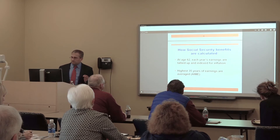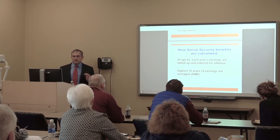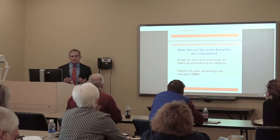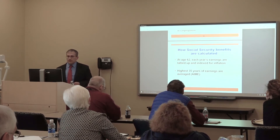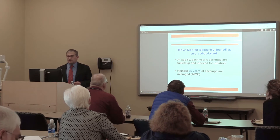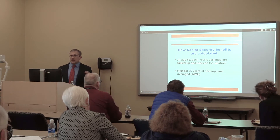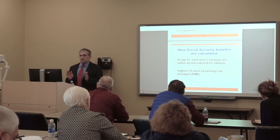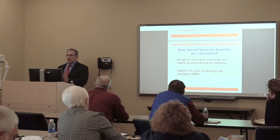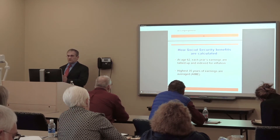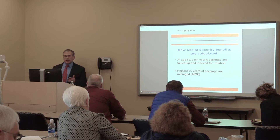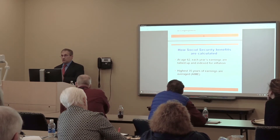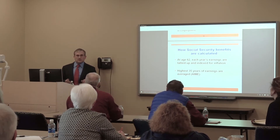At age 62 is the earliest you can start to receive Social Security retirement benefits. Social Security calculates your estimated benefits based on your work history by taking the highest 35 years of earnings — the AIME, or Average Indexed Monthly Earnings. Even though you need 40 credits to qualify, it's the top 35 years of earnings used to calculate your benefit. If you've worked 45 years, the top 35 years will be used. So if some years had low income and you plan to work a few more years, your projected benefit may go up.